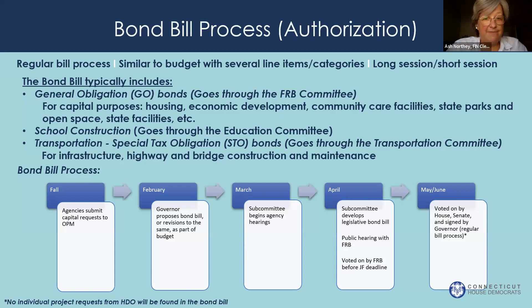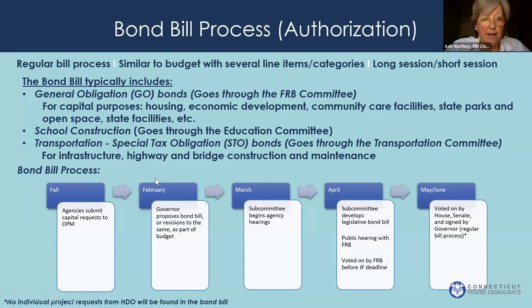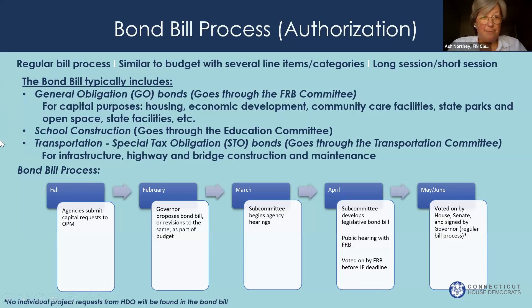Capital purposes include things like housing, economic development, community care facilities, state parks, open space, and state facilities. Some examples from the bond bill are $50 million for baby bonds, $100 million extension for the Crumbling Foundations program, $25 million to address health disparities in mental health and substance abuse, and funding for the UConn Research and Health Center.